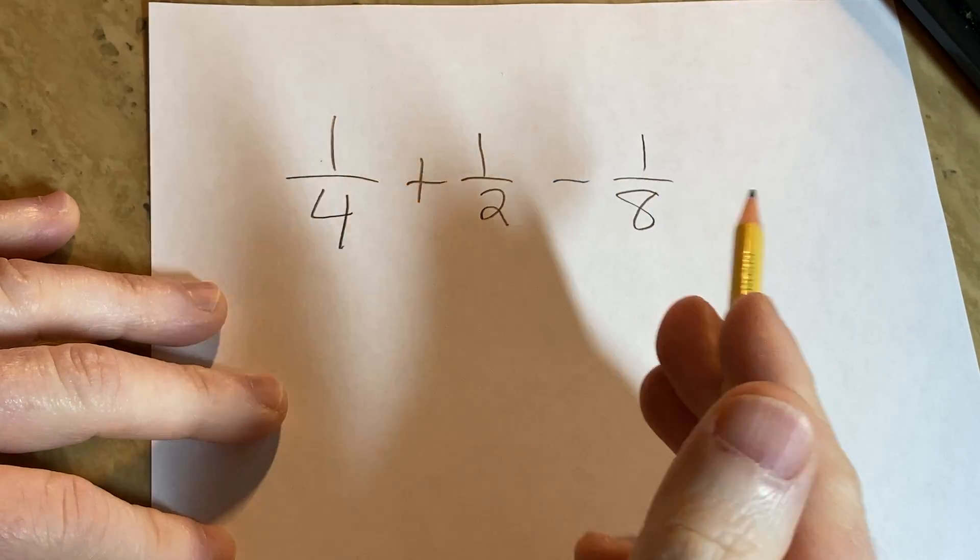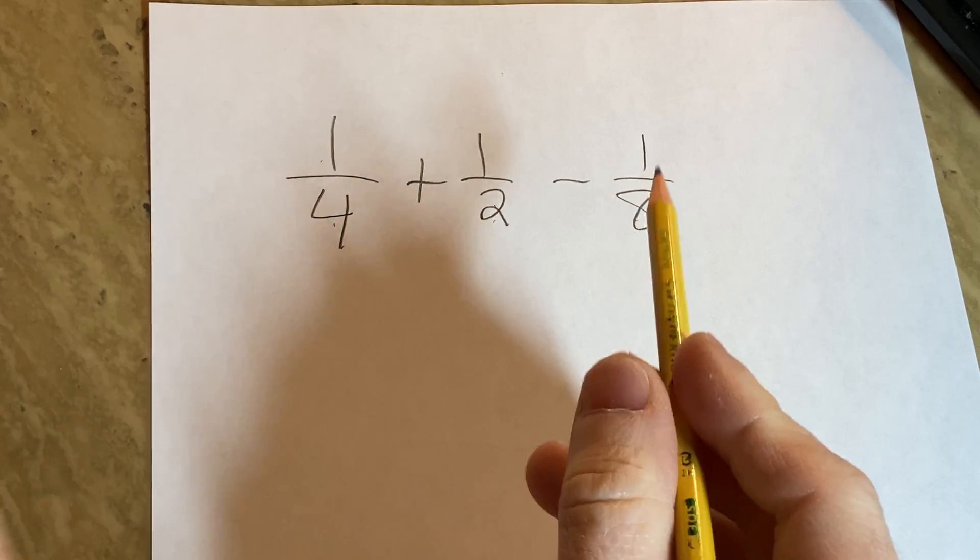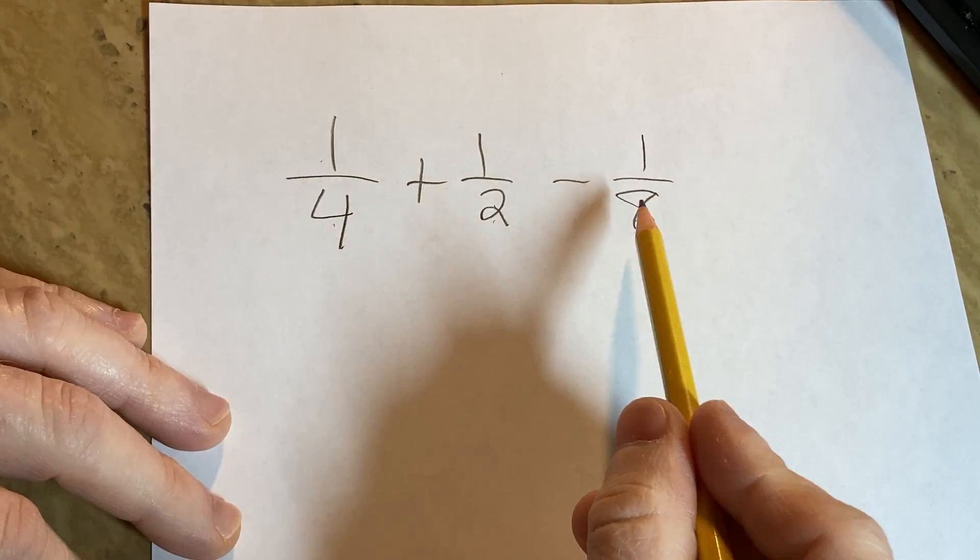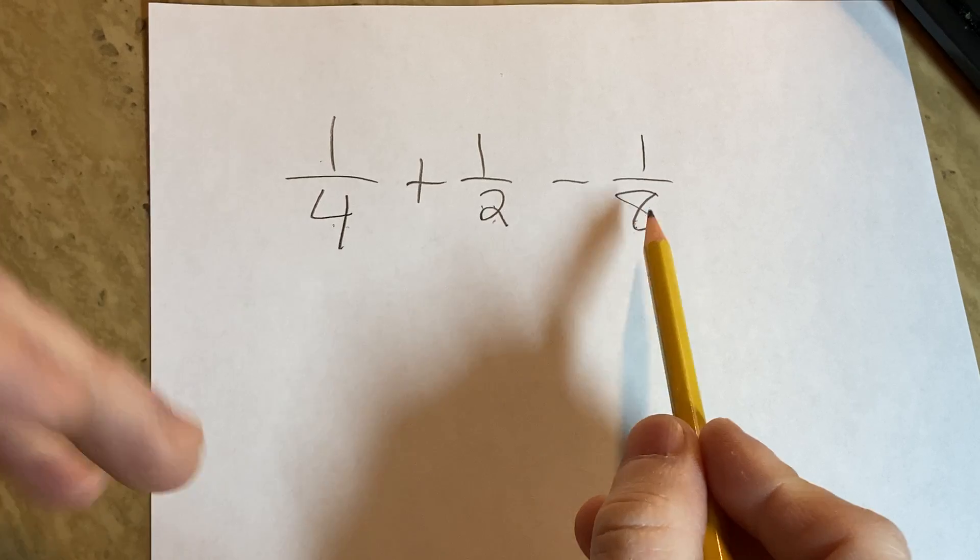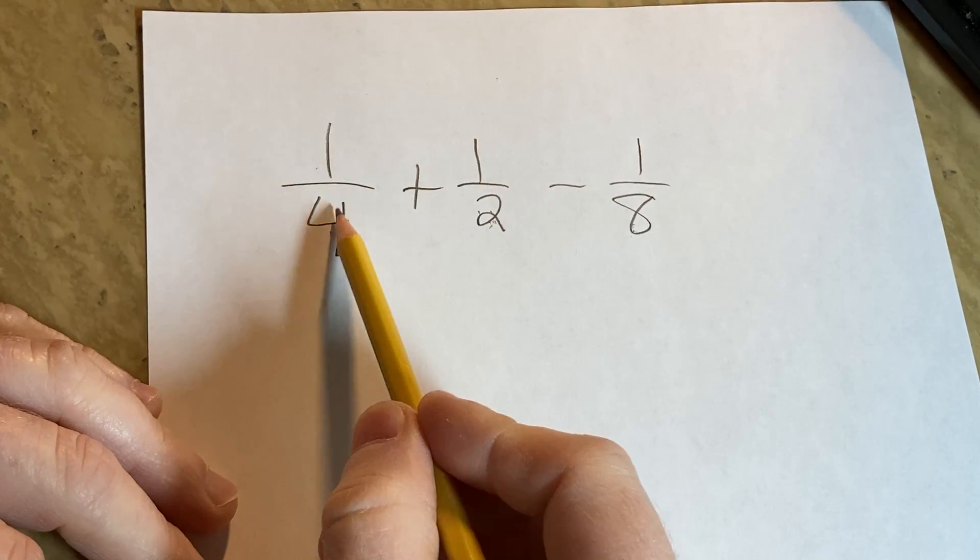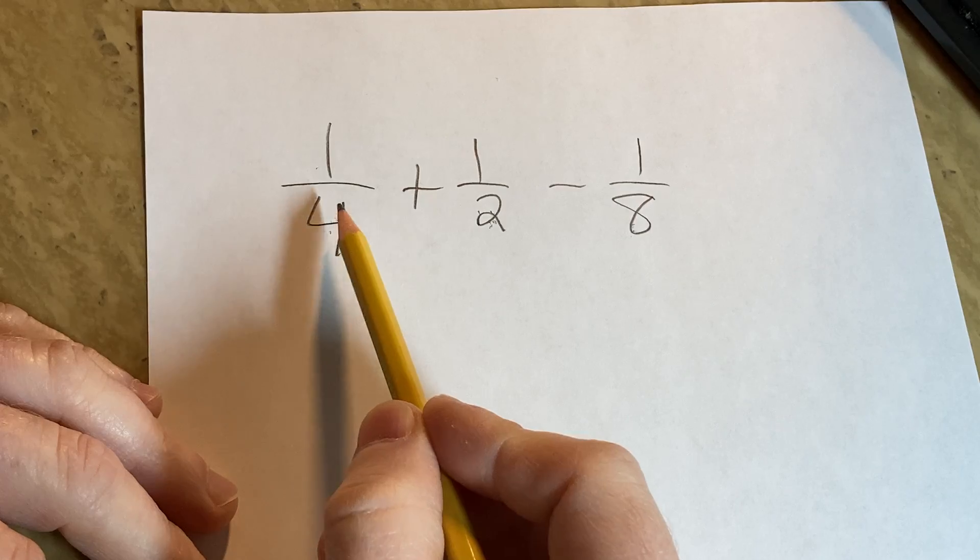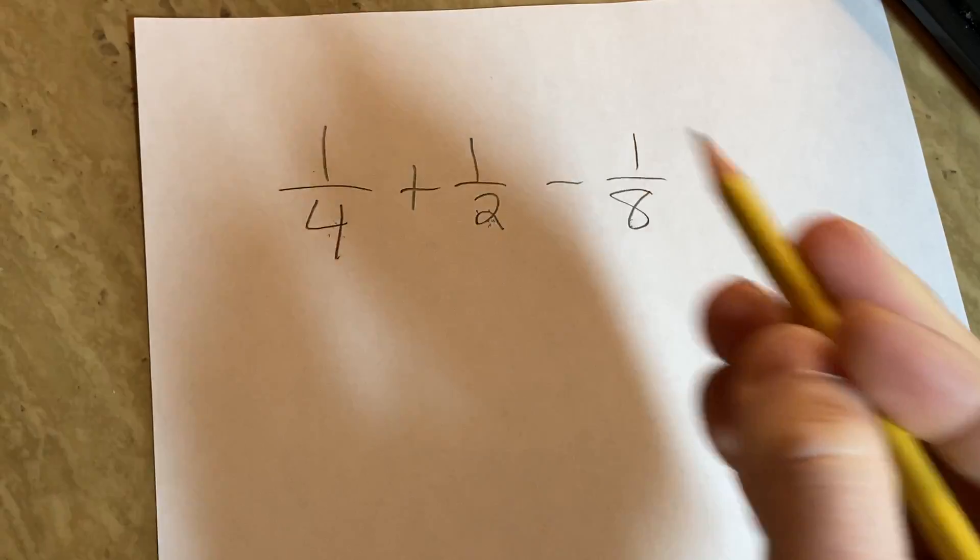We're going to find what's called the common denominator. So the denominator is the number that's on the bottom of the fraction, and to find a common denominator means to basically make all of these numbers the same. So 8 is here already. We know we can make the 2 into 8 by multiplying by 4, and we know we can make the 4 into 8 by multiplying by 2. So let's just use 8 as our common denominator. It's actually called the least common denominator.